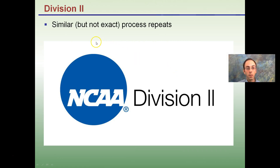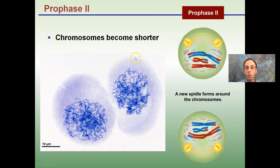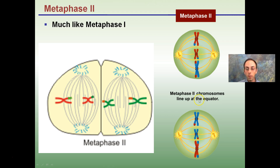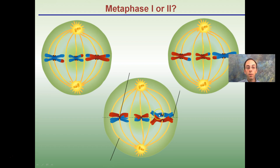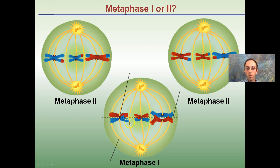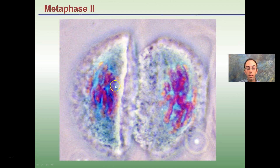Division II is a similar but not identical process. In prophase II, chromosomes become shorter and more condensed, and spindle fibers form. In metaphase II, chromosomes line up again. An important difference between metaphase I and metaphase II is that in metaphase II, separation at the centromere will occur, whereas in metaphase I the centromere is not broken — the chromosomes simply migrate.